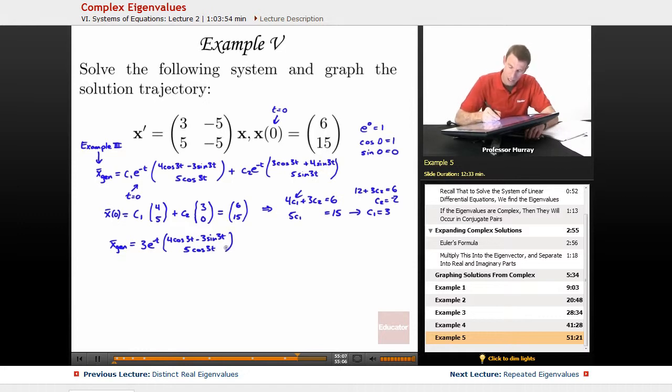Now, my c2 was negative 2, so minus 2 e to the negative t times [3 cosine of 3t plus 4 sine of 3t; 5 sine of 3t].